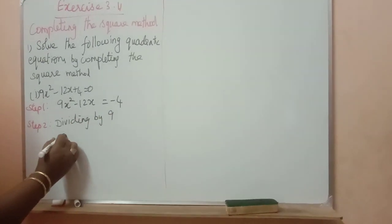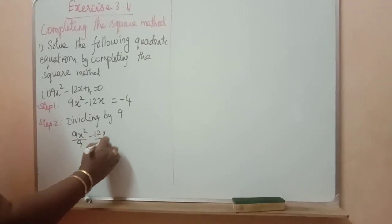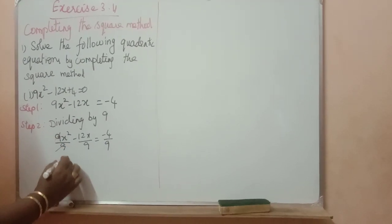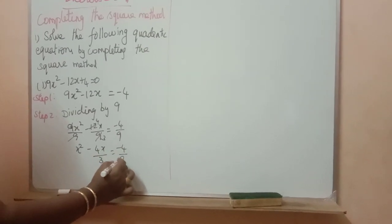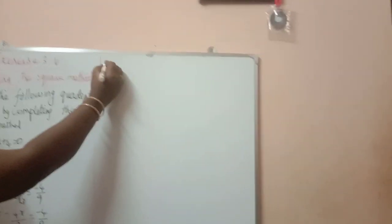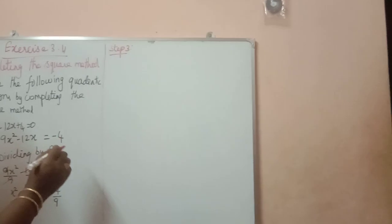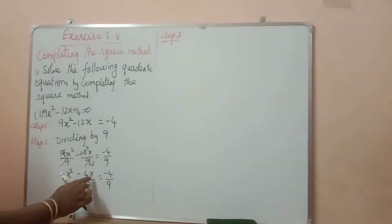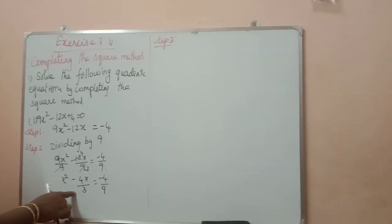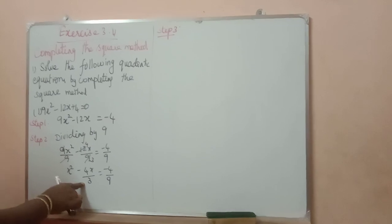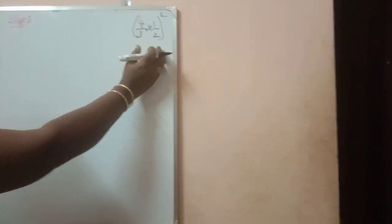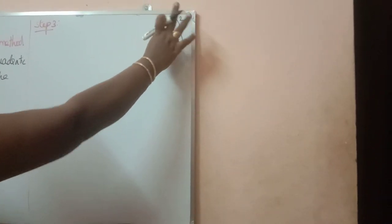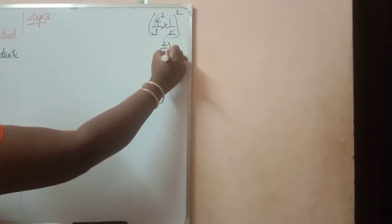9x square by 9 minus 12x by 9 is equal to minus 4 by 9. The 9s will be cancelled. x square minus 4x by 3 is equal to minus 4 by 9. Step 3: take the coefficient of x — that is 4 by 3, no need of sign — coefficient of x into half, the whole square. Cancel: you will get 2 by 3, the whole square.